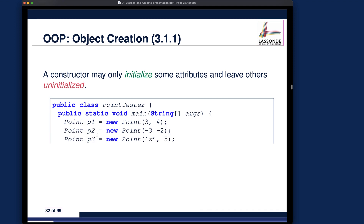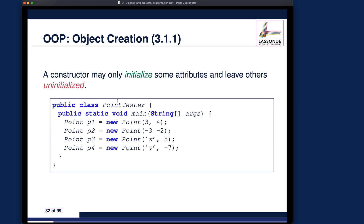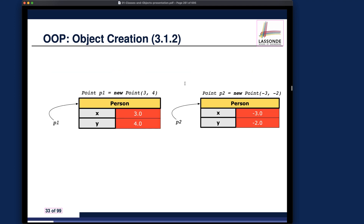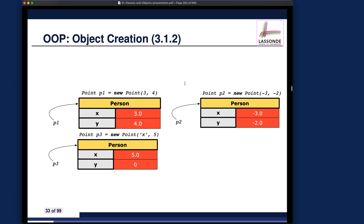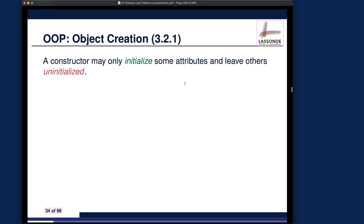A constructor may only initialize some attributes and leave others uninitialized. For example, in our product class with six attributes, if you use a default constructor all six store default values. But you may choose to initialize only two attribute values, while the other four store default values. That's a diagram you should really get used to drawing, and I will show you an example.